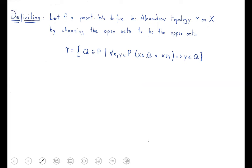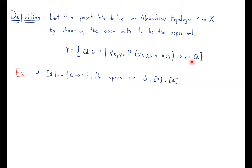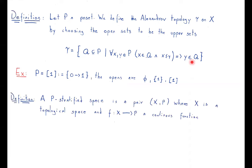The first definition: we pick a poset P and define a topology on it given by the following opens — subsets of our poset such that if x is in the subset and x ≥ y, then y is also in the subset. For example, if we take the poset with two elements {0,1} with the classical order, the opens are the empty set, the singleton {1}, and the whole poset.